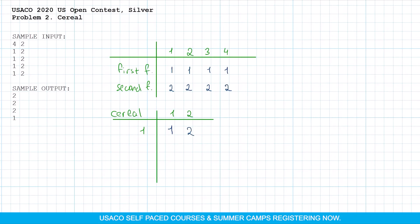If we start with the second cow, then the first type of cereal will be taken by the second cow and the second type by the third cow. If we start with the third cow, cereal of the first type will be taken by cow number 3 and cereal of the second type by cow number 4. And when we start with the last cow, she will select cereal of type 1 and cereal of type 2 will not be selected at all.